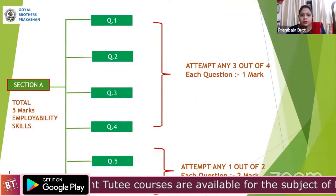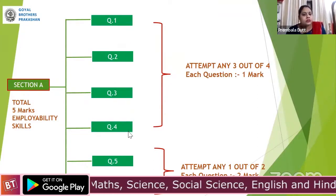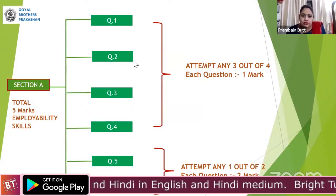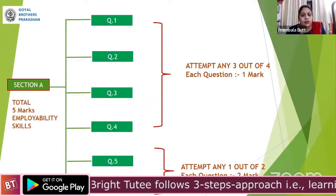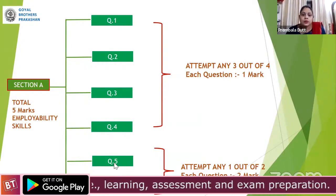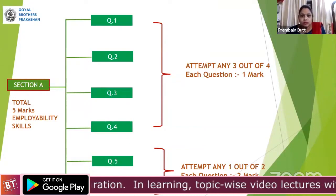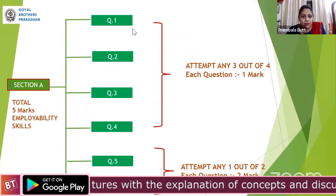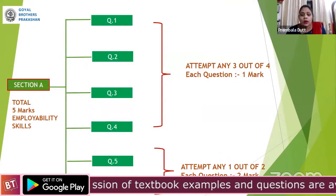They should prepare from the subject-specific skills first, because in practicals also the topic will be from subject-specific. In competency-based questions also, the questions will be from there, and the maximum weightage of subject-specific is 20 marks. So always suggest them to prepare part B first. In section A, there are in total six questions — the first four are of one mark, and amongst these four, the child has to attempt only three.